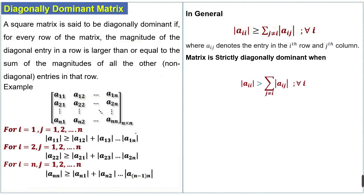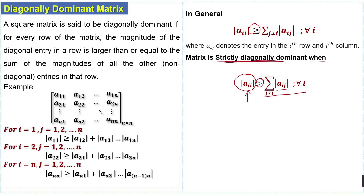A matrix is strictly diagonally dominant when the magnitude of the diagonal entry is strictly greater than — not equal to — the sum of magnitudes of all non-diagonal entries in that row.